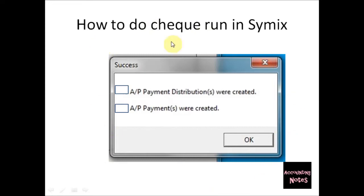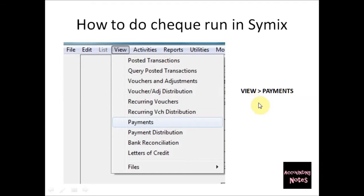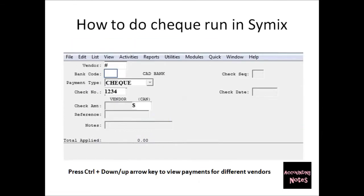When your payment has been performed, you will see a success pop-up box. Normally this box will show the number of payment distributions created, and it will also show the number of accounts for which payments were created. Click OK. The next step is to view payments, so go to View on the toolbar and click Payments.